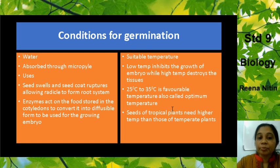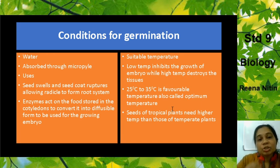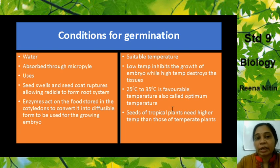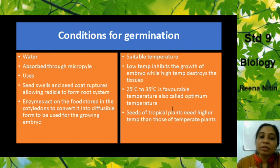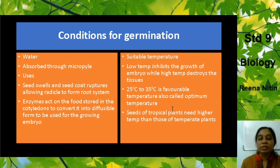The first condition is water. When you soak seeds in water, you observe that they become a little bigger — they increase in size — because the seed absorbs water. Through which part? Through the micropyle, which we learned about last time. It is a small pore lying close to the hilum, that scar part of the seed. The seed swells and the seed coat ruptures, allowing the radicle to form the root system. The enzymes act on the food stored in the cotyledons to convert it into a diffusible form to be used for the growing embryo.